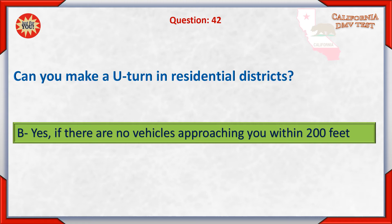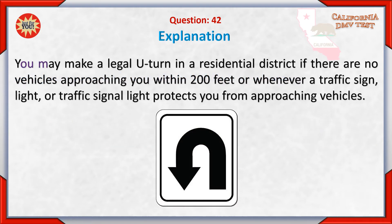You can make a U-turn in a residential district if there are no vehicles approaching you within 200 feet, or whenever a traffic sign, light, or traffic signal light protects you from approaching vehicles.